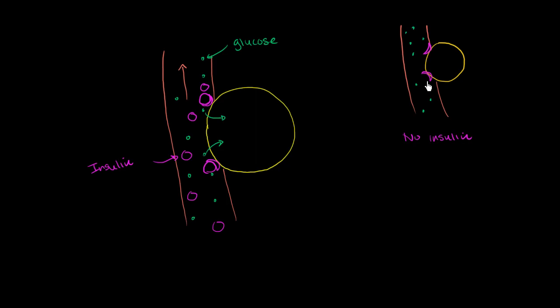Well, in this situation, since there's nothing to bind to these receptors, the glucose channels won't be opened up. And the glucose will not be able to enter into the cell. And this situation is type 1 diabetes. Type 1 diabetes.